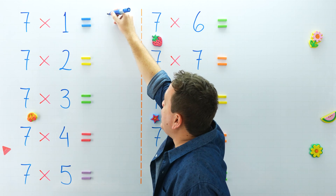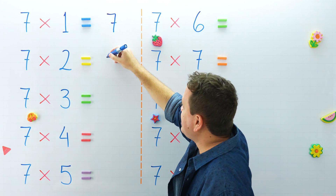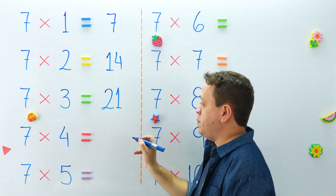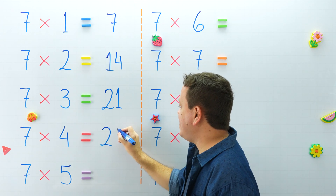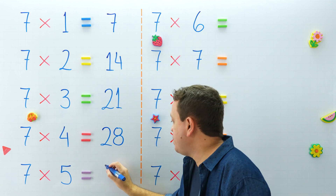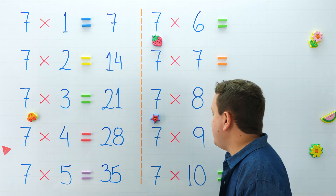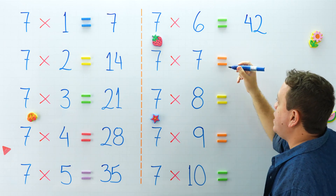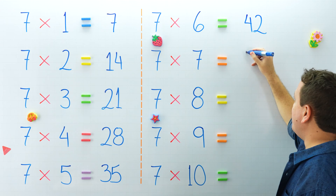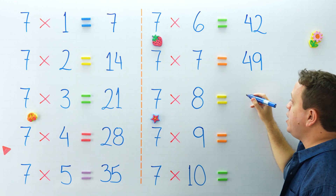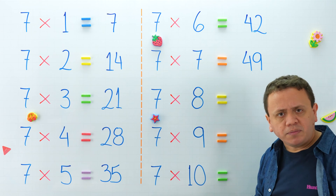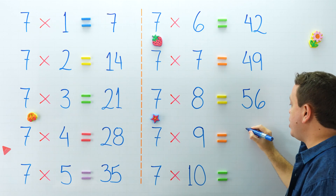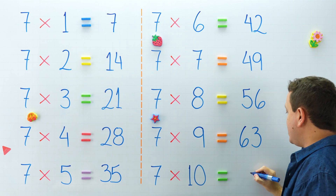Now the 7 times table. 7 times 1 equals 7, and 7 times 2 equals 14. 7 times 3 equals 21. And 7 times 4 equals 28. 7 times 5 equals 35. The other side: 7 times 6 equals 42. What about 7 times 7? 7 times 7 is equal to 49. Over here, 7 times 8 equals 56. And 7 times 9 equals 63. 7 times 10 equals 70.